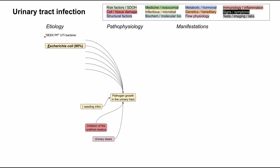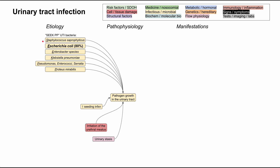You can remember the other bacteria that cause UTIs with the mnemonic SEEK-PP — kind of immature, kind of funny, but helpful. That stands for Staphylococcus saprophyticus, E. coli, Enterobacter species, Klebsiella pneumoniae, Pseudomonas, and Proteus mirabilis. These are the most common bacteria found in UTIs.